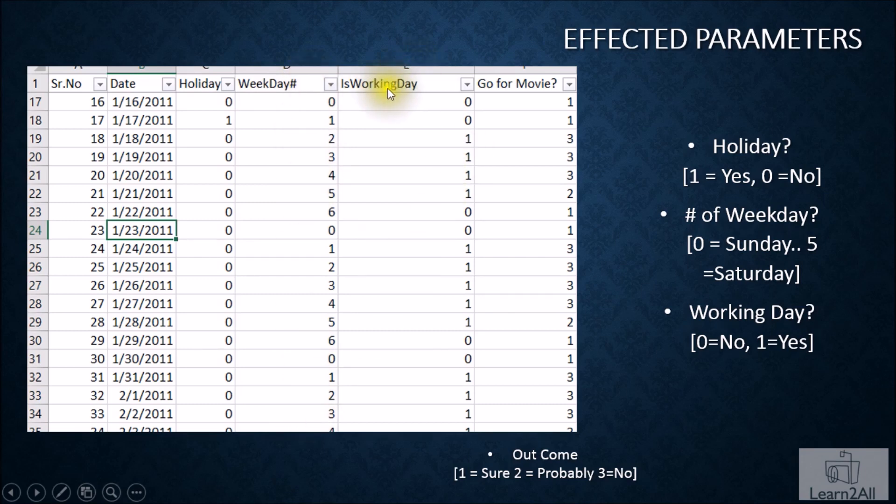They have one more column that is working day, which indicates if this particular day is a working day. They are capturing that with one, and zero means that is no working day. For example, this is a public holiday. Still, it's a weekday. But people are not working on the day due to public holiday, so it is capturing with zero. Zero means not working day, one means working day.